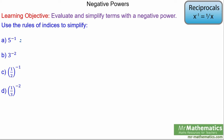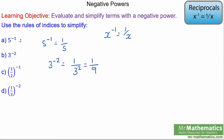We're going to evaluate these indices with a negative power. We know x to the negative 1 is the same as 1 divided by x. So if we've got 5 to the negative 1, that is simply 1 over 5 — the negative power means 1 divided by. Now 3 to the power of negative 2: the negative power means 1 over, and it's 3 squared, so 1 over 9, since 3 squared is 9.